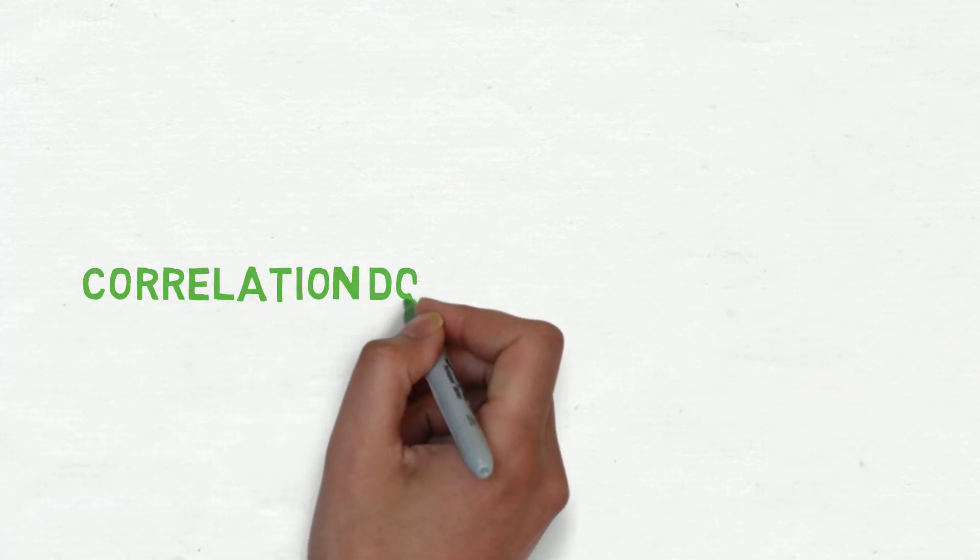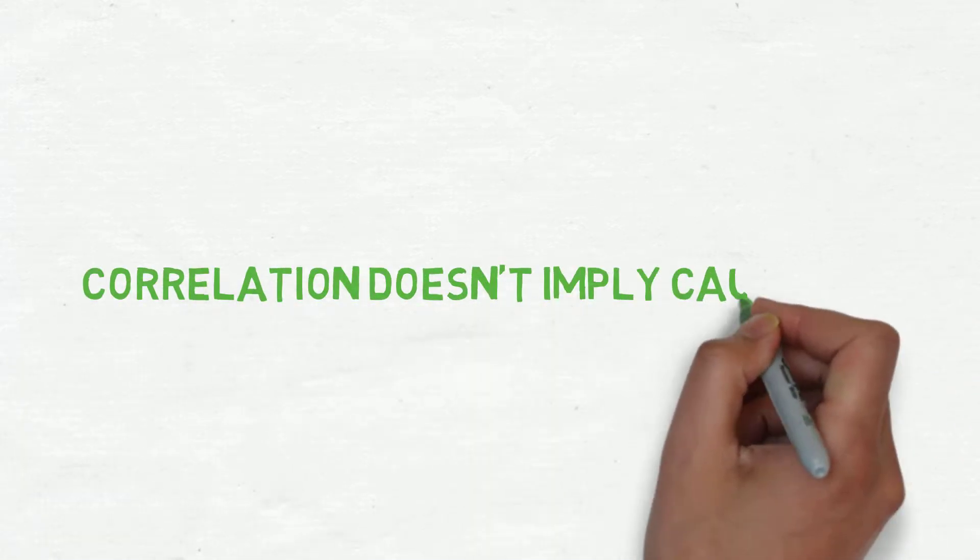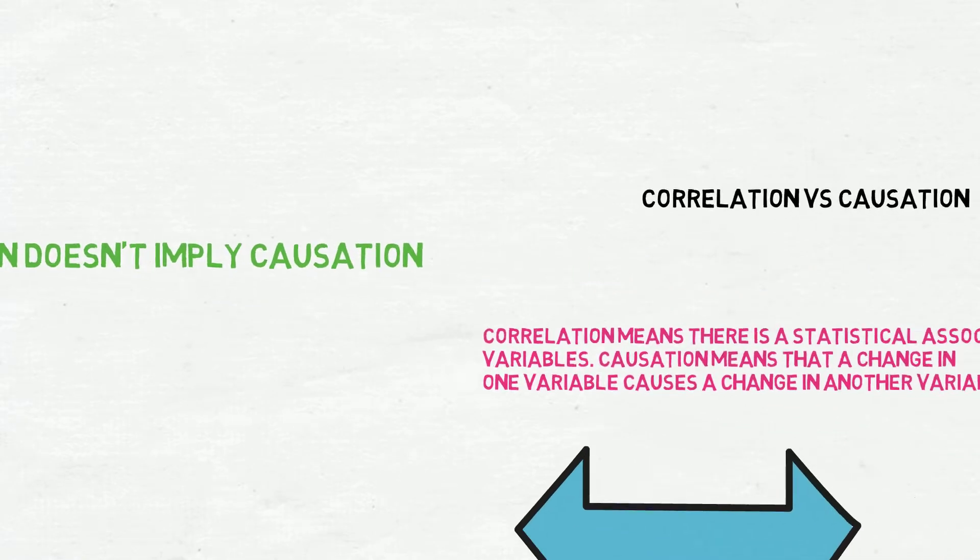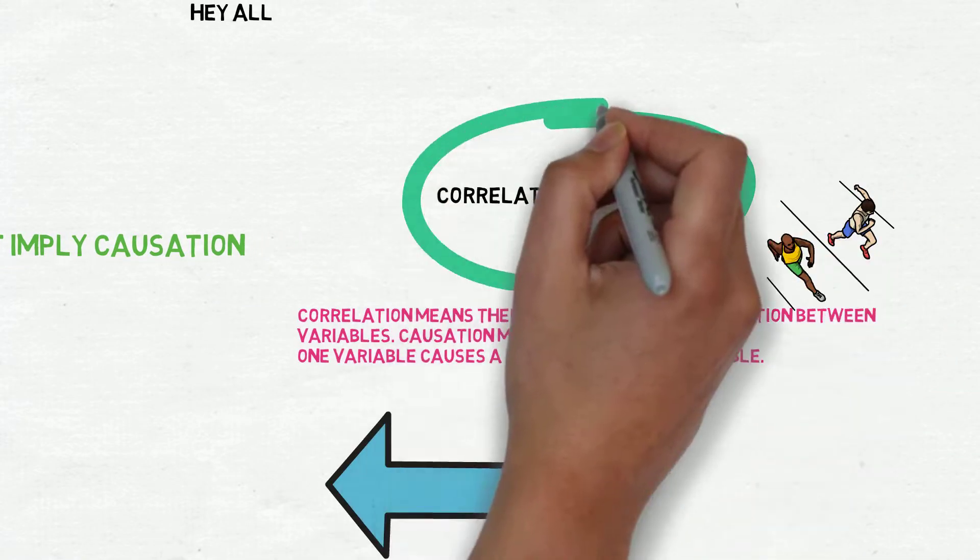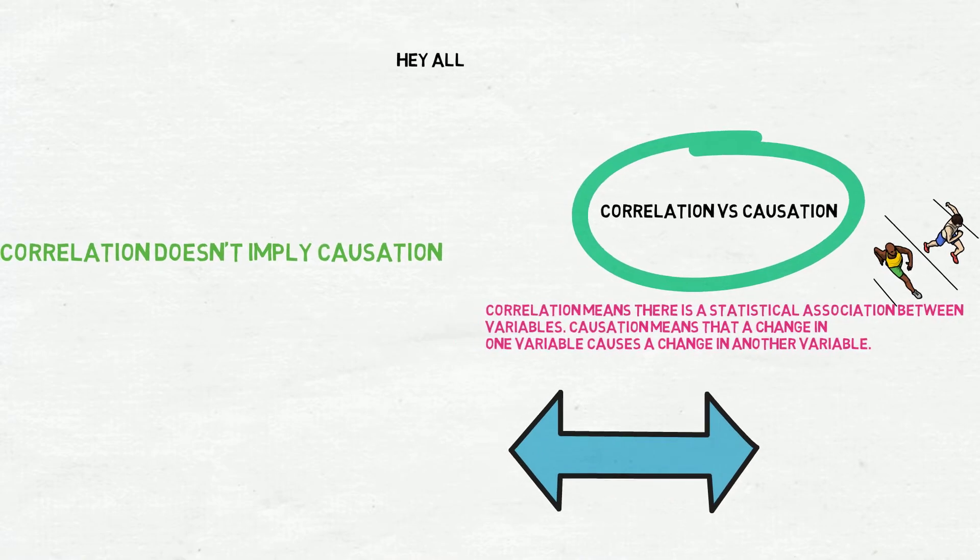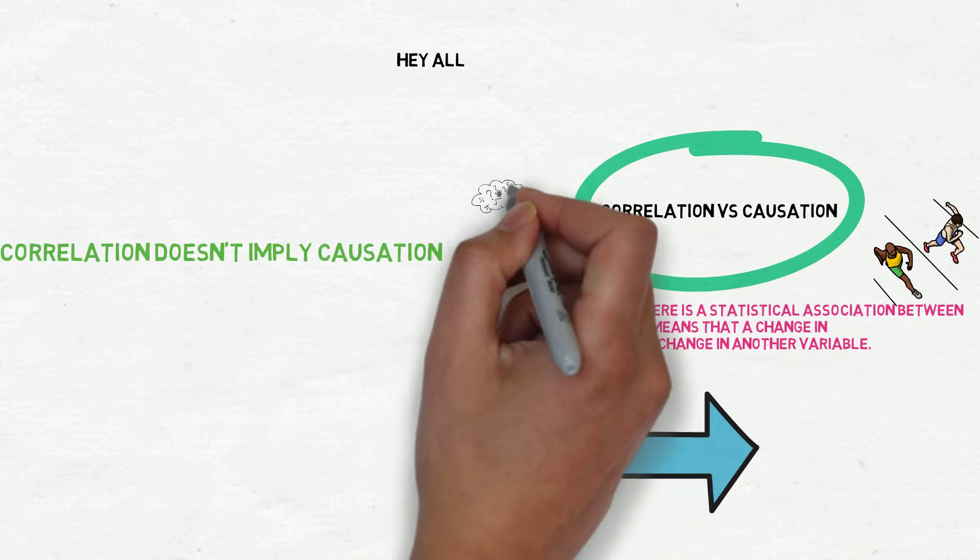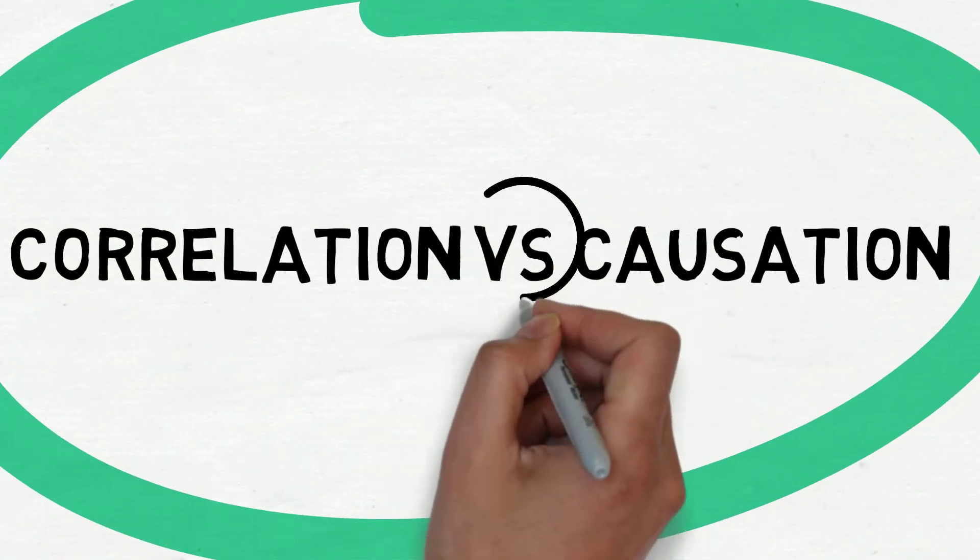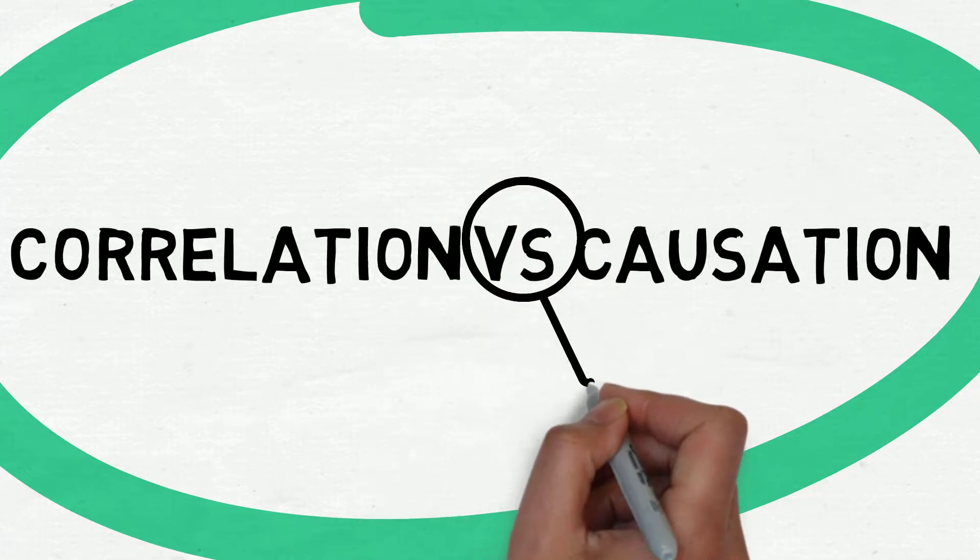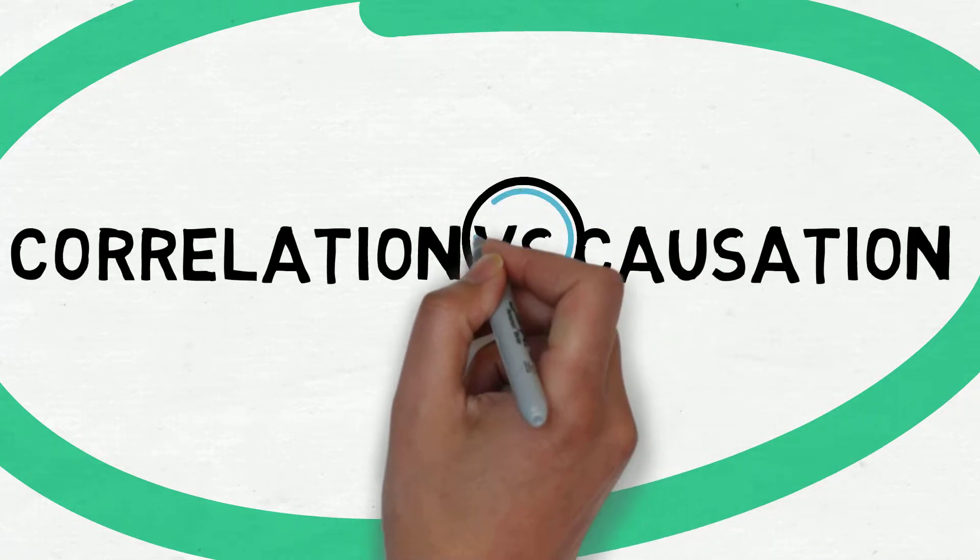the phrase correlation doesn't imply causation. Correlation and causation are two related ideas, but understanding their difference will help you critically evaluate and interpret scientific research. Let's see how. So firstly, let's see about correlation and causation in detail.